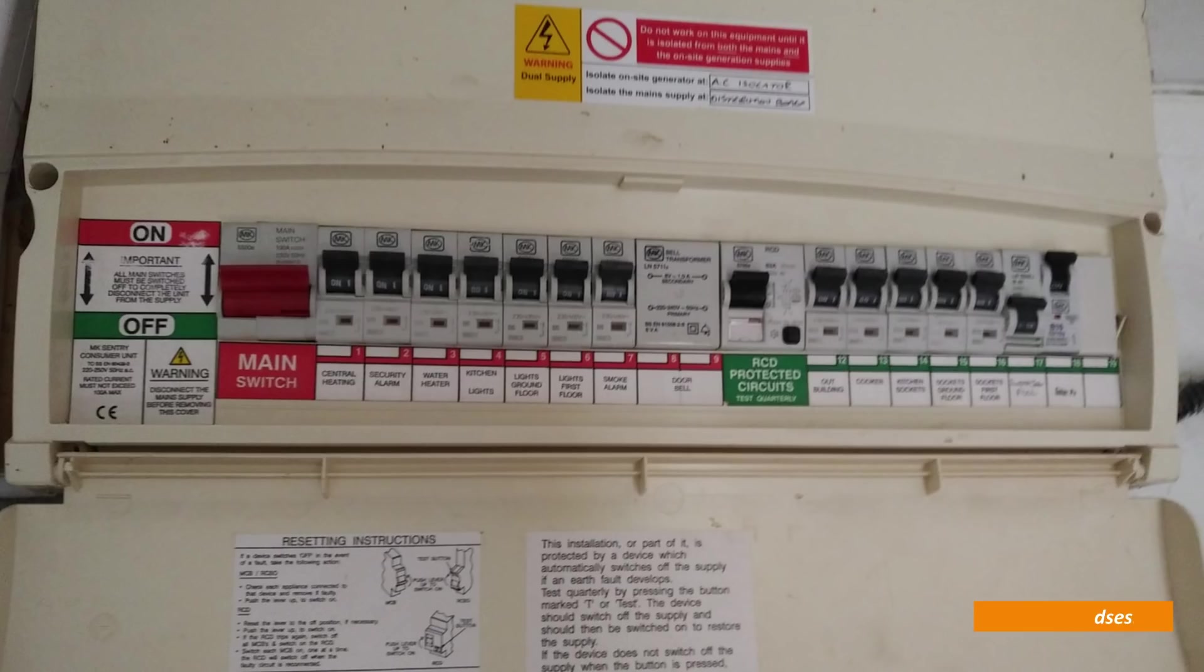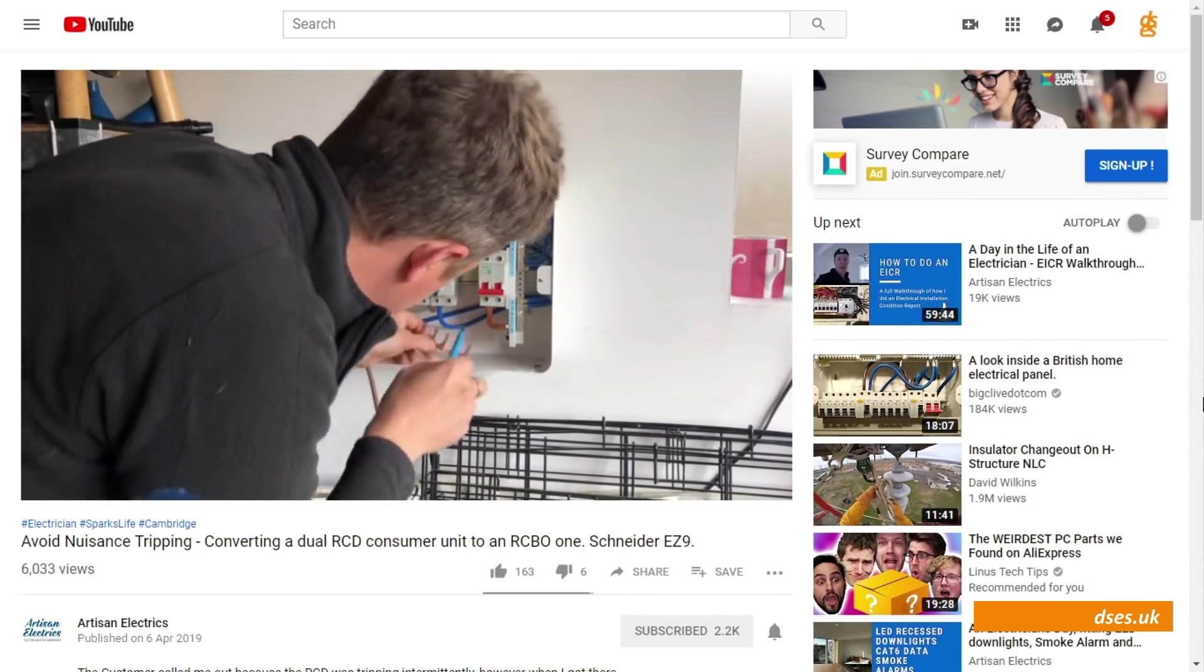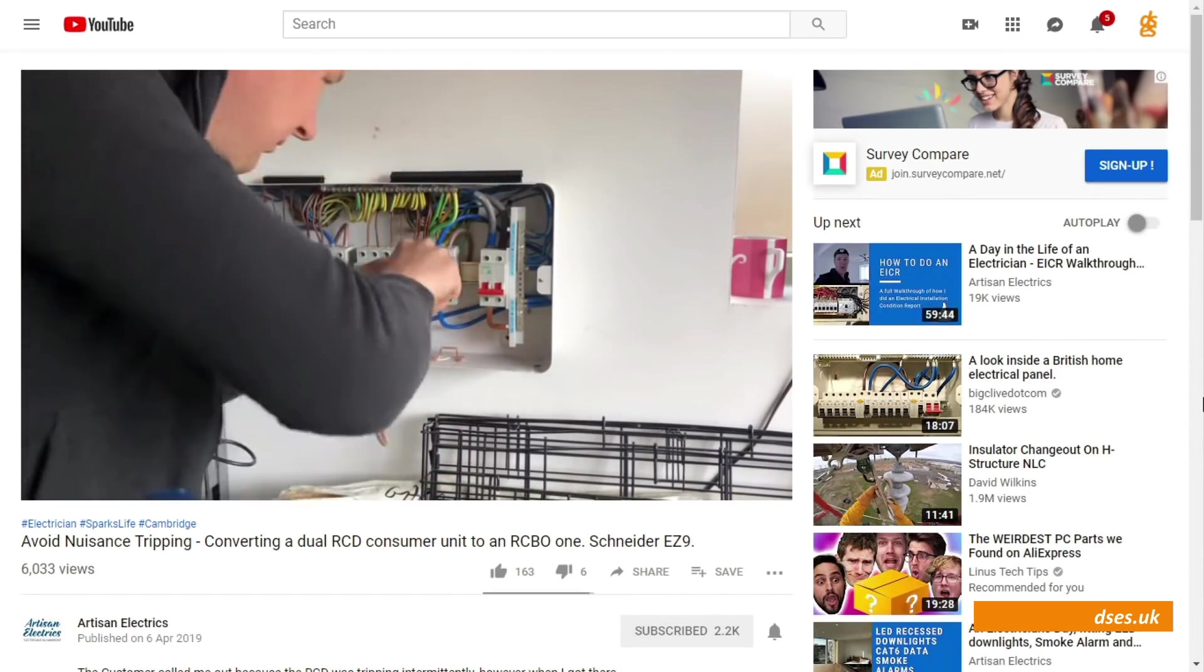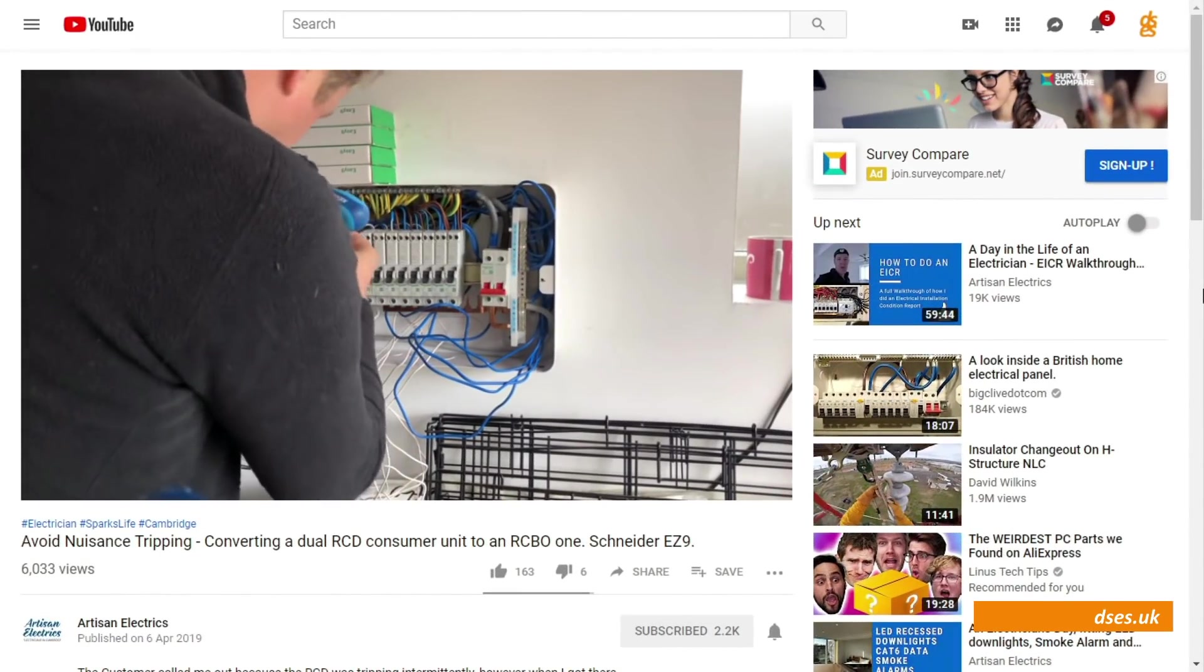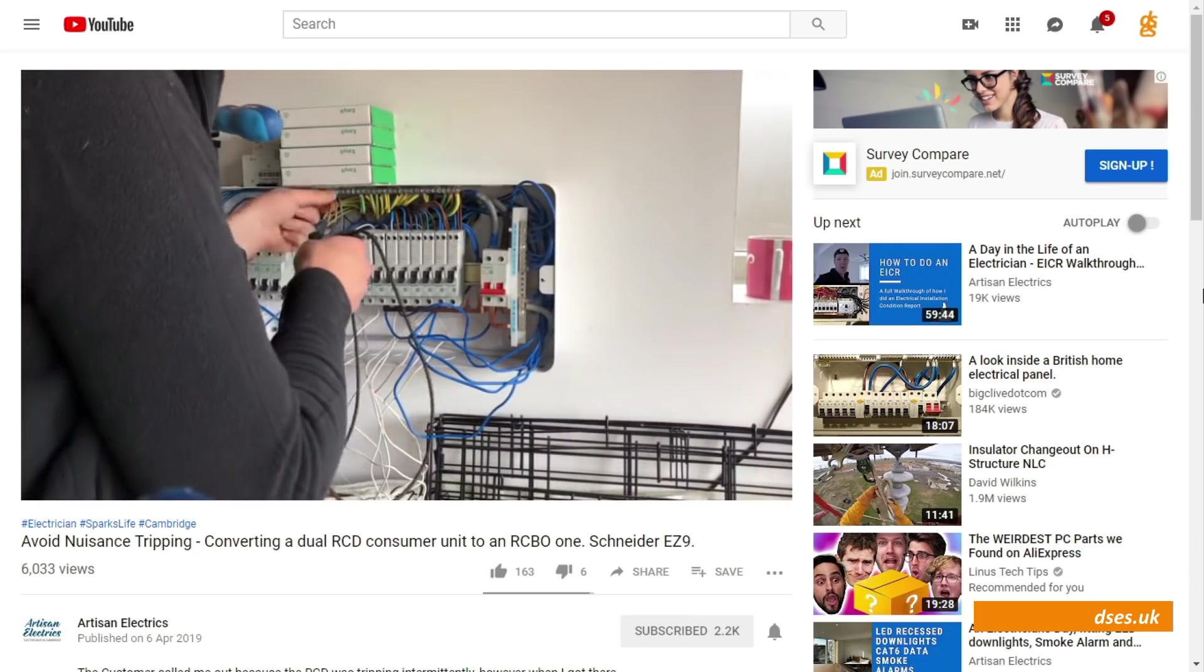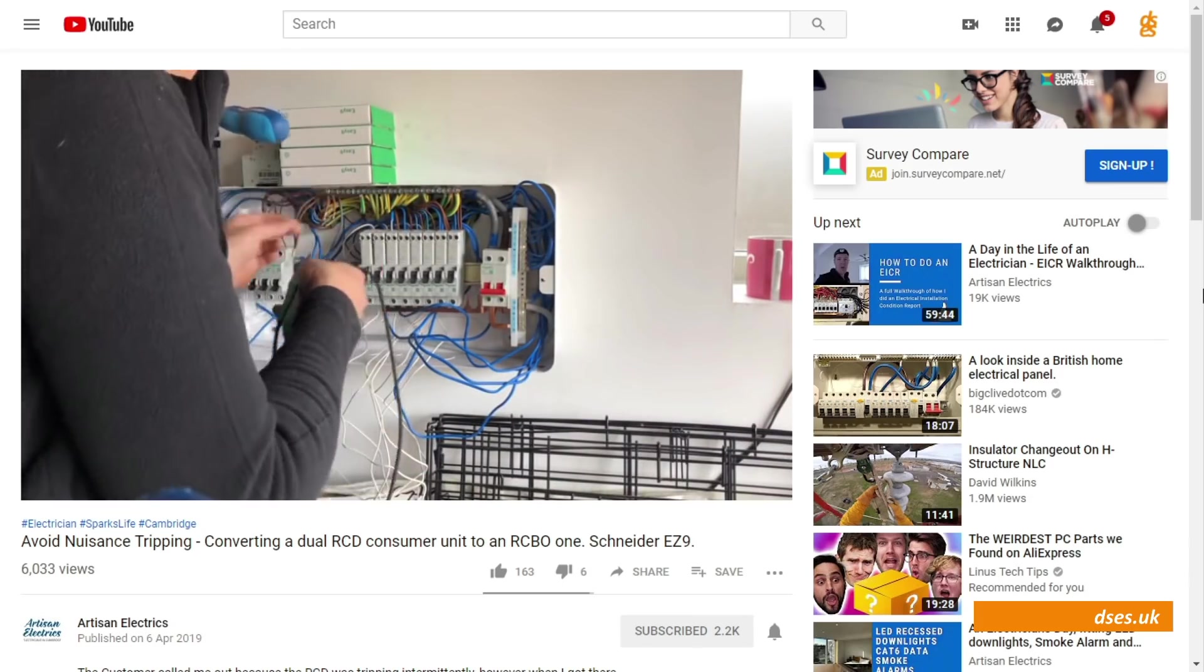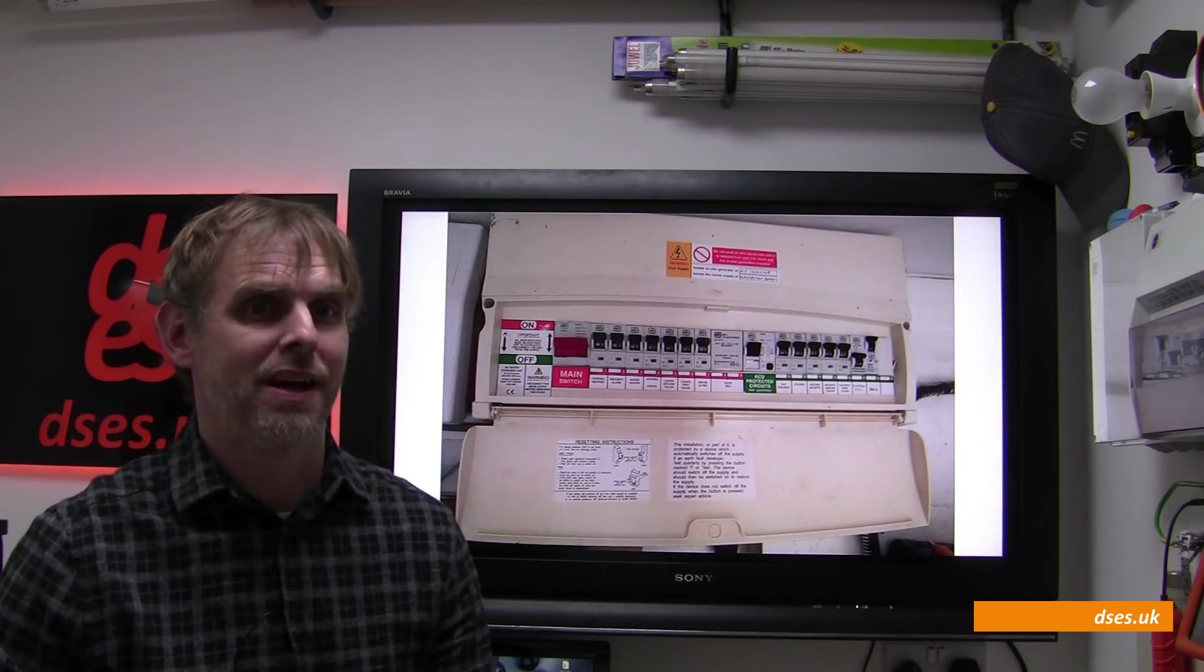I see on the Artisan Electrics channel he had a similar problem recently, and converted the dual RCD board into an RCBO configuration in order to segregate the circuits to prevent an earth leakage fault on any single circuit from affecting the others. But this also has the advantage of preventing the cumulative effect of poor insulation resistance from causing a trip, and it's that cumulative effect that I shall be looking at today.